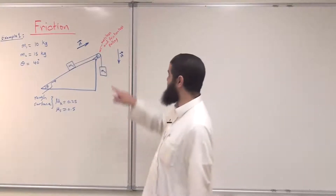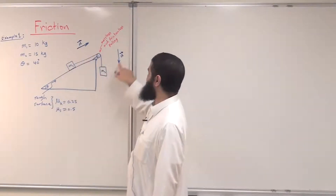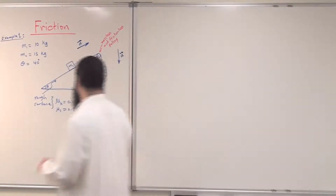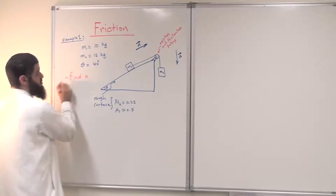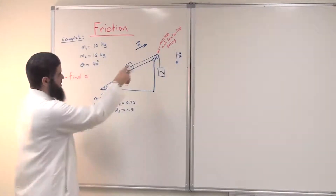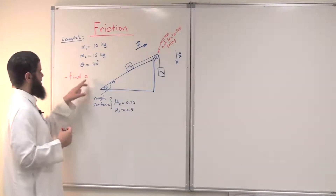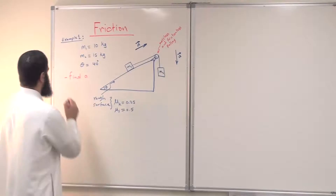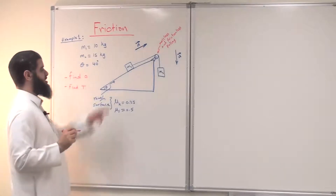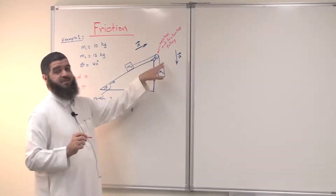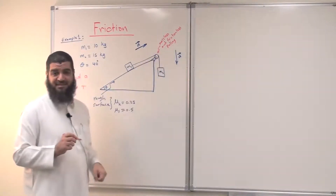The mass m2 is hanging and has 15 kilograms. We want to find the acceleration. It is given that m1 is accelerating upward along the incline and m2 is accelerating downward. We'd like to find the acceleration 'a' — it will be the same for both objects since they are connected by the same inextensible string. We'd also like to find the tension T in the string.